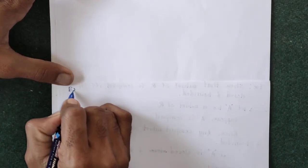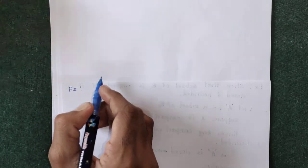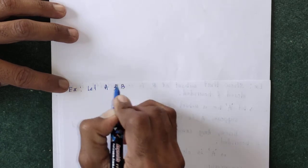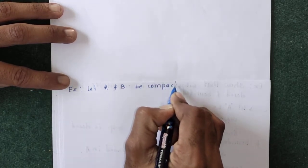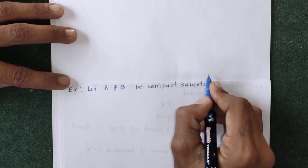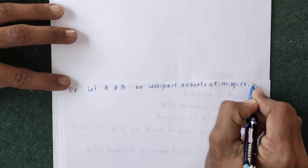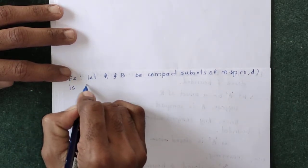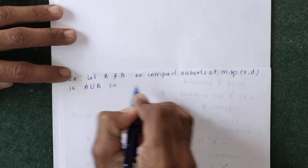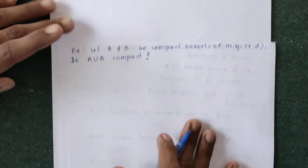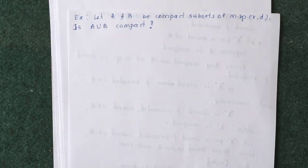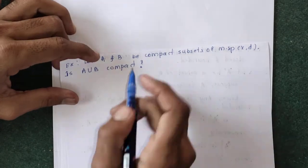The next example: let A and B be compact subsets of a metric space (X, d). The question is: is A union B compact? So A is compact and B is also compact, and we have to check whether their union is compact or not.